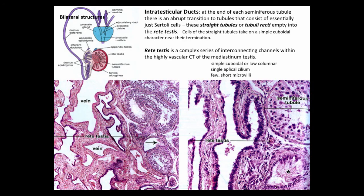Looking at the intratesticular ducts, at the end of each seminiferous tubule there is an abrupt transition to tubules consisting essentially just of Sertoli cells. These straight tubules — tubuli recti — enter into the rete testis. Cells of the straight tubules take on a simple cuboidal character near their termination. Histological images show a straight tubule with arrowhead and the rete testis at higher power, with cuboidal-shaped cells visible.